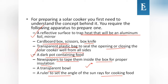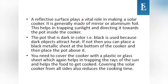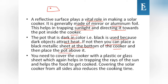To construct the solar cooker: a reflective surface made of mirror or aluminum foil traps sunlight and directs it toward the pot. Use a dark or black colored pot since dark objects attract heat; alternatively, place a black metallic sheet at the bottom and set the pot above it. Cover the cooker with a plastic or glass sheet to trap sun rays, which also reduces cooking time.